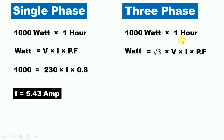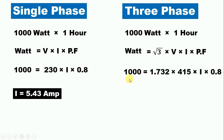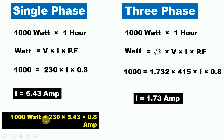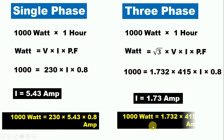Now for three phase, the formula is P = √3 × V × I × power factor. In place of power we put 1000 watt, the value of √3 is 1.732, voltage is 415 volt, power factor is 0.8, and we solve for current. The answer comes out as 1.73 ampere. So if the load is 1000 watt connected to three phase power supply, it draws 1.73 ampere. If we put this value of current back into the formula, the value of power is the same — power of single phase and power of three phase are equal.